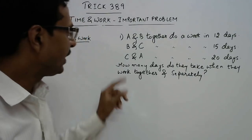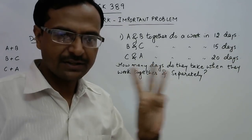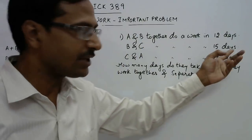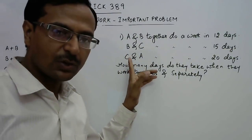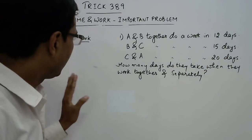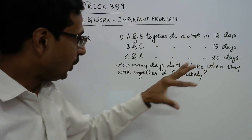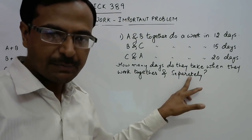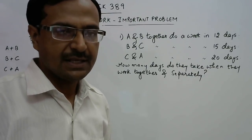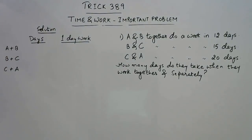The next question goes like this. A and B together finish a piece of work in 12 days. B and C together finish it in 15 days, and C and A together finish the work in 20 days. We need to find how many days all 3 take when working together, and also how many days each person — A, B and C — takes when working independently.